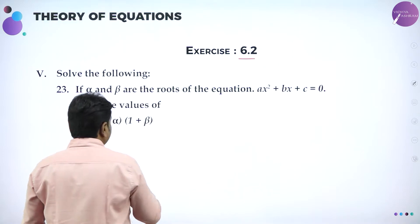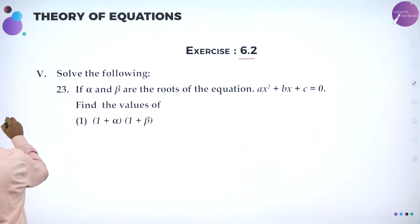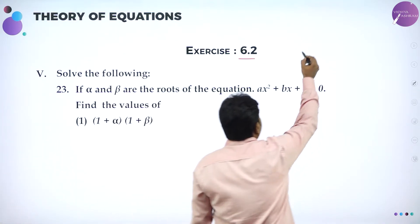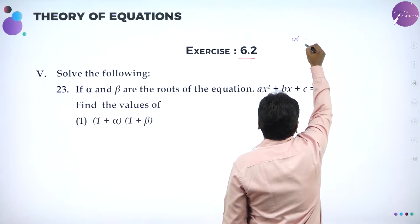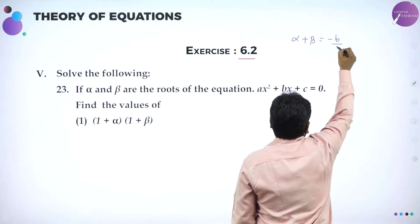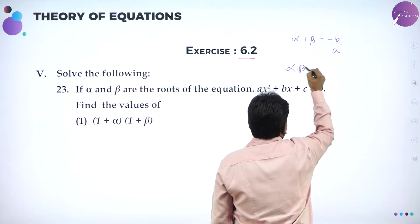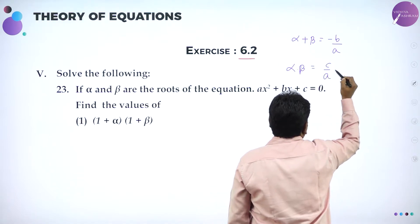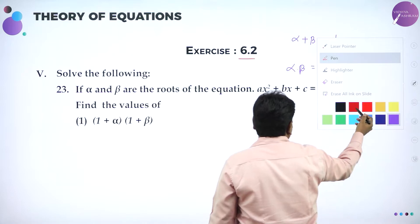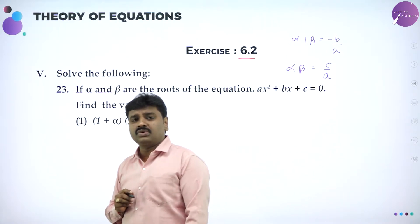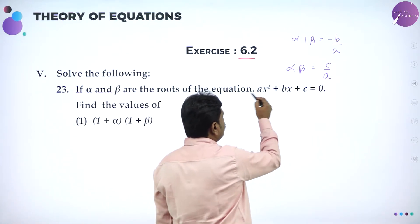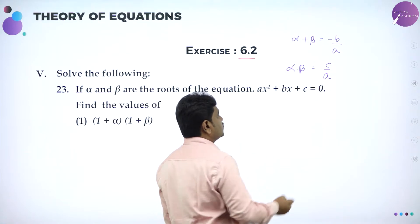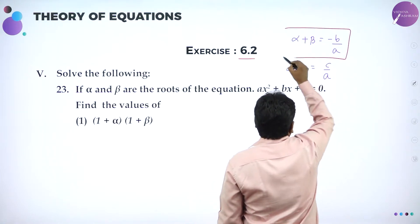For any quadratic equation, sum of the roots alpha plus beta is minus B by A, and product of the roots alpha into beta is C by A. This is a basic what you should become thorough with. Sum of the roots: minus B by A. Product of the roots: C by A. B means coefficient of X, C means constant. These are the two basics which we use to solve the problems.